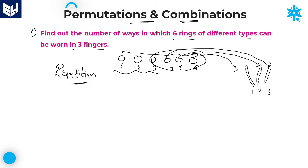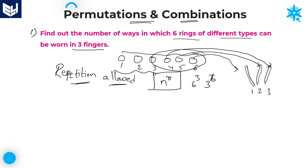Repetition is allowed. Whenever repetition is allowed, the required formula to get the result is n power r. So many students will be confused about what is n and what is r in n^r — whether it is 6^3 or 3^6. I will tell you in detail.